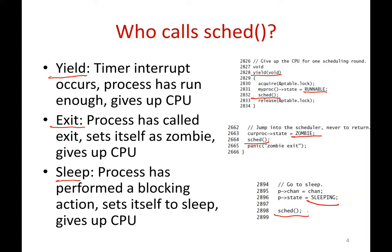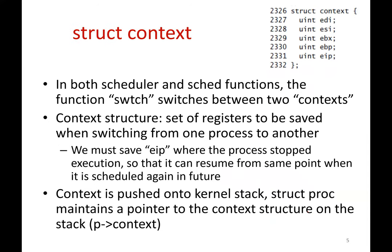These are the three ways the sched function can be invoked by a process, and sched will context switch back into the scheduler, which finds some other process to run. As part of this context switching, there is an important data structure called struct context — this is what is saved and restored during a context switch. The switch function saves the struct context of the old process and restores the struct context of the new process. The struct context is basically a bunch of registers — some CPU state that you are saving.